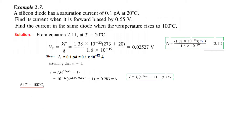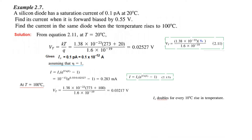Next, find the current at 100°C. Two things change due to the temperature increase: VT and IS. For VT at 100°C: TK = 273 + 100 = 373 K, so VT = 0.03217 V. And the key assumption: IS doubles for every 10°C rise in temperature.